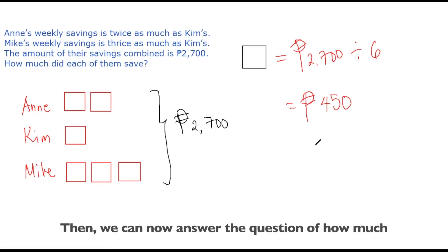Then we now can answer the question of how much each of Ann, Mike and Kim saved during the week. So since one block is 450 pesos, Ann's savings, we have two blocks. So that's 450 pesos times two, which is 900 pesos.